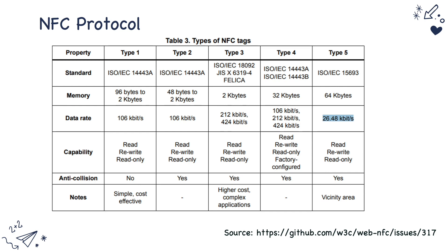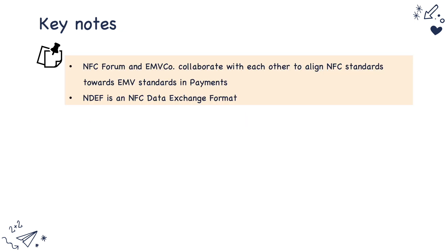Each NFC tag type is intended for different purposes. For example, Type 5 is used for vicinity-based cards like those implemented under ISO 15693, whereas Type 4 is generally used for payment cards. Each type is classified based on its memory, data rates, and capabilities. EMVCo implements the foundation for EMV technology in payments, and the NFC Forum and EMVCo collaborate with each other to align NFC standards with payments technology.